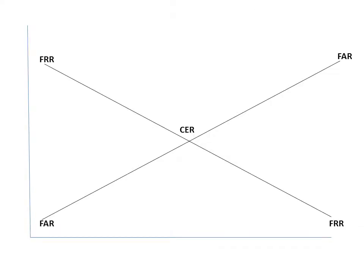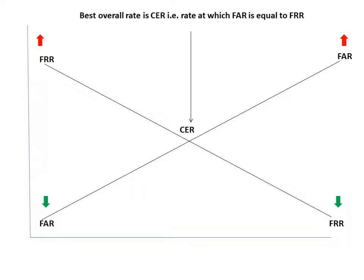Now let us discuss the relation between acceptance rate and rejection rate. If you want to keep your False Acceptance Rate low, by default your False Rejection Rate will be high — there is an inverse proportion between both terms. Conversely, if you want to keep your rejection rate low, your acceptance rate will be high. So the best overall rate is the Cross Error Rate, which is the rate at which FAR is equal to FRR.